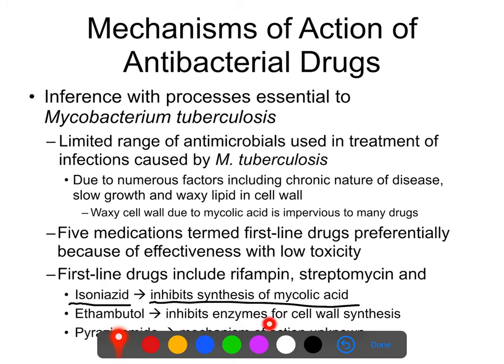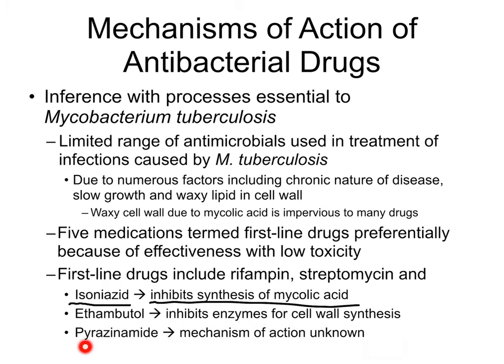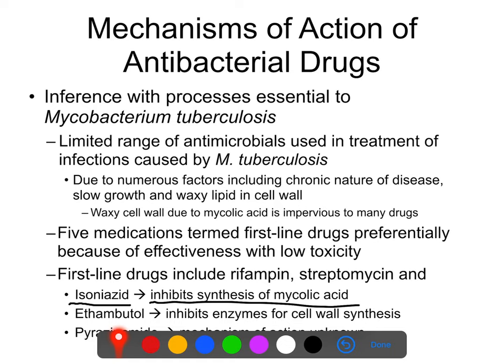Ethambutol inhibits enzymes for cell wall synthesis, and pyrazinamide — we don't know exactly how it works. The two things I want you to know from this category are: you should recognize isoniazid as being specific for tuberculosis, and rifampin — mentioned earlier — also works on tuberculosis. These two drugs are often prescribed together, and rifampin plus these three drugs are the first-line drugs used preferentially against Mycobacterium tuberculosis.